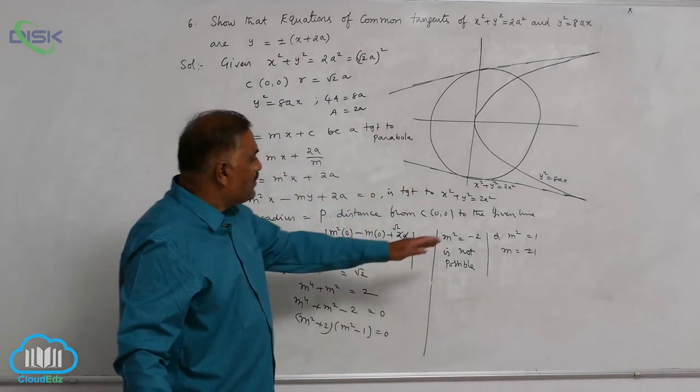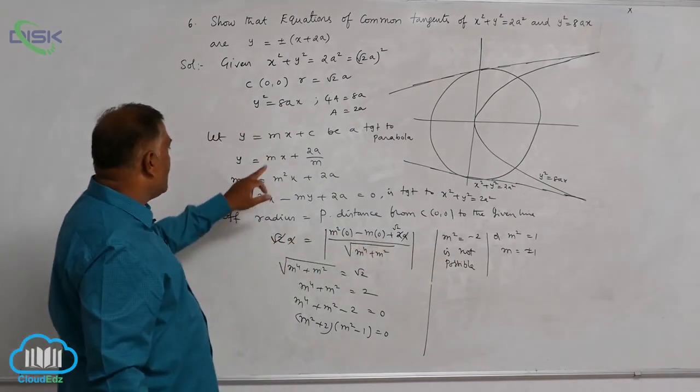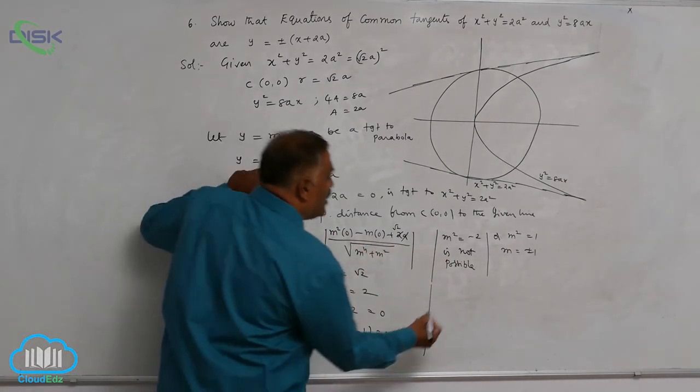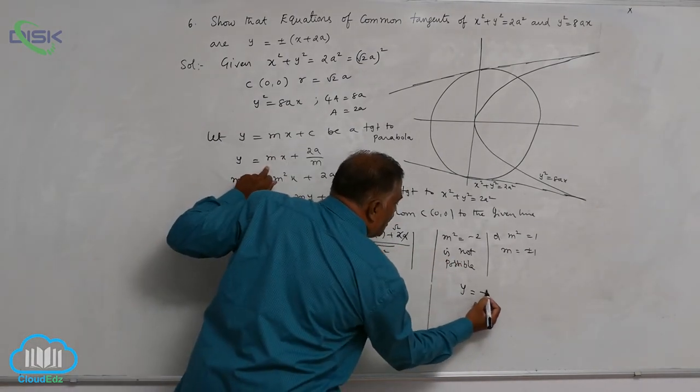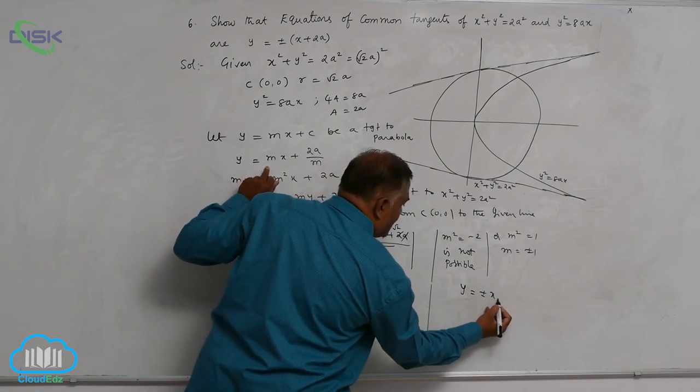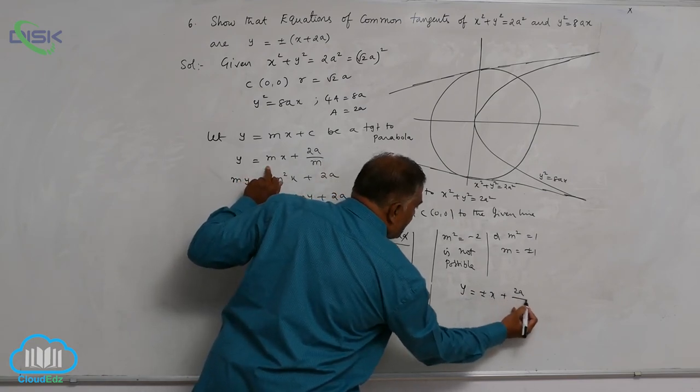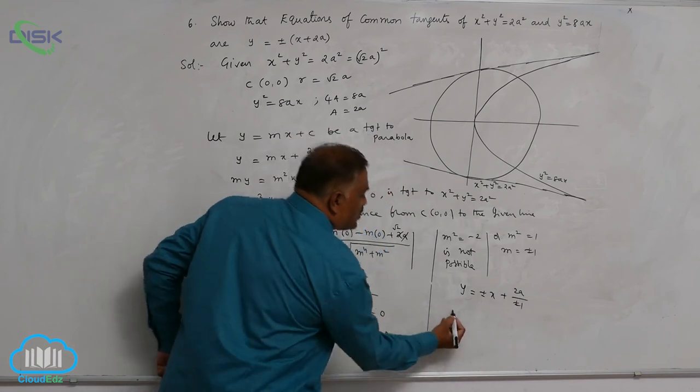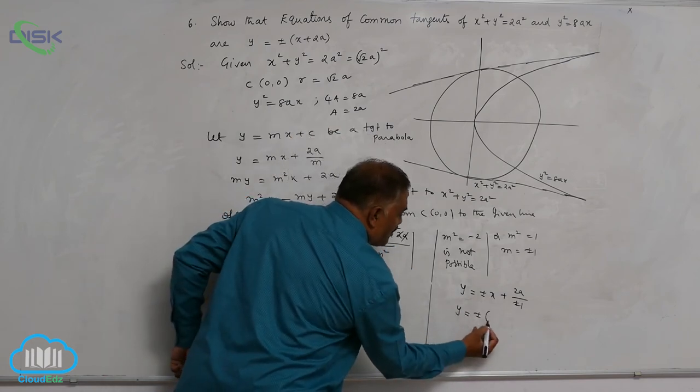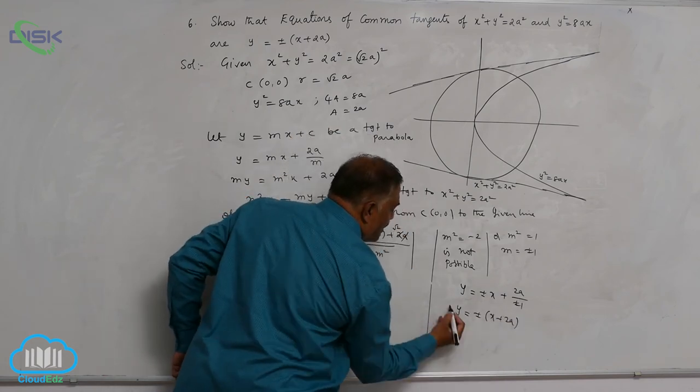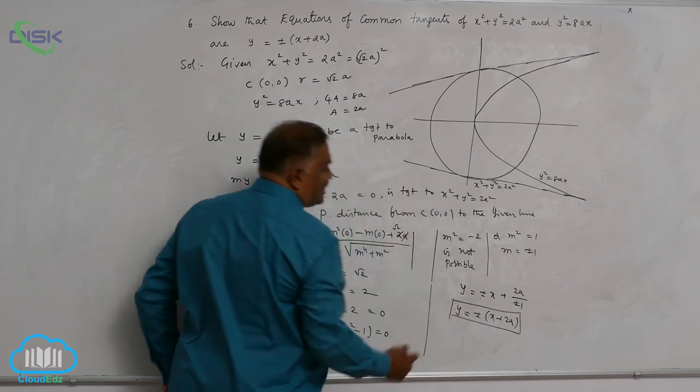After getting the value of m here, substitute in the equation. So it is y is equal to plus or minus x plus 2a by plus or minus 1. So ultimately plus or minus x plus 2a. Now this is the equation of common tangent.